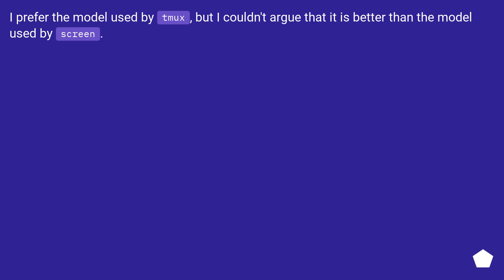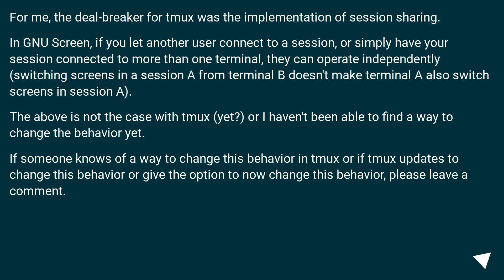I prefer the model used by Tmux, but I couldn't argue that it is better than the model used by Screen. For me, the deal breaker for Tmux was the implementation of session sharing. In GNU Screen, if you let another user connect to a session, or simply have your session connected to more than one terminal, they can operate independently — switching screens in session A from terminal B doesn't make terminal A also switch screens in session A. The above is not the case with Tmux yet, or I haven't been able to find a way to change the behavior. If someone knows of a way to change this behavior in Tmux, or if Tmux updates to give that option, please leave a comment.